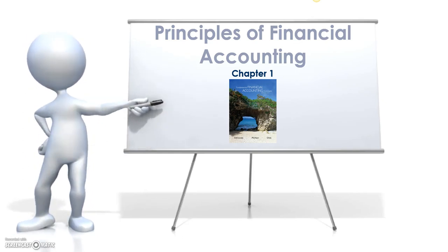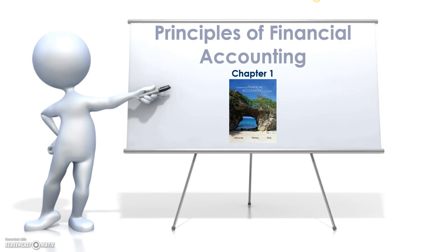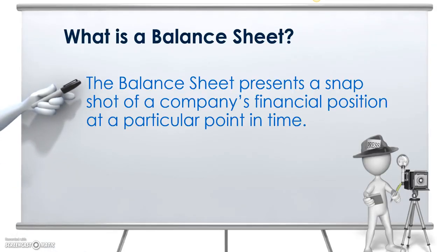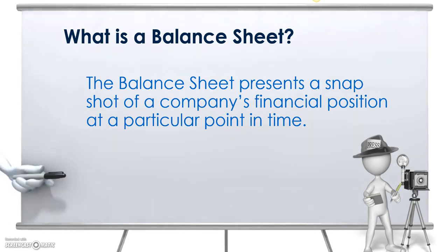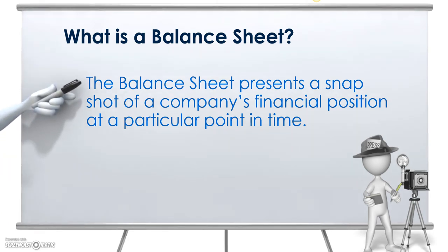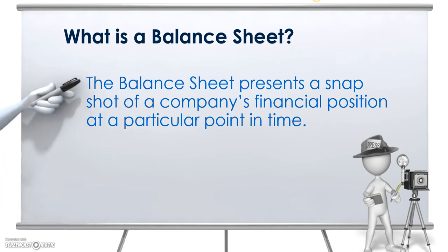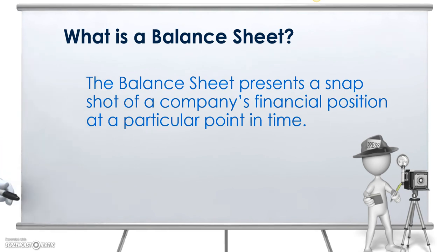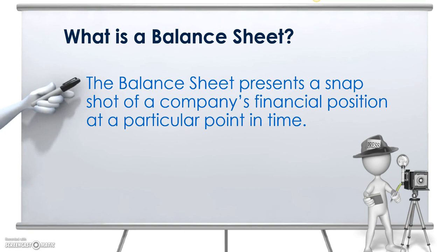The early portion of this class focuses on learning about the financial statements and what's included on them. I want to start this presentation by discussing the four major financial statements, starting with the balance sheet. The balance sheet represents essentially a snapshot of a company's financial position at a particular point in time — think of it as taking a picture at the close of business, say at the end of the month or the end of the year, freezing time at that moment to see where the financial position of the company is.